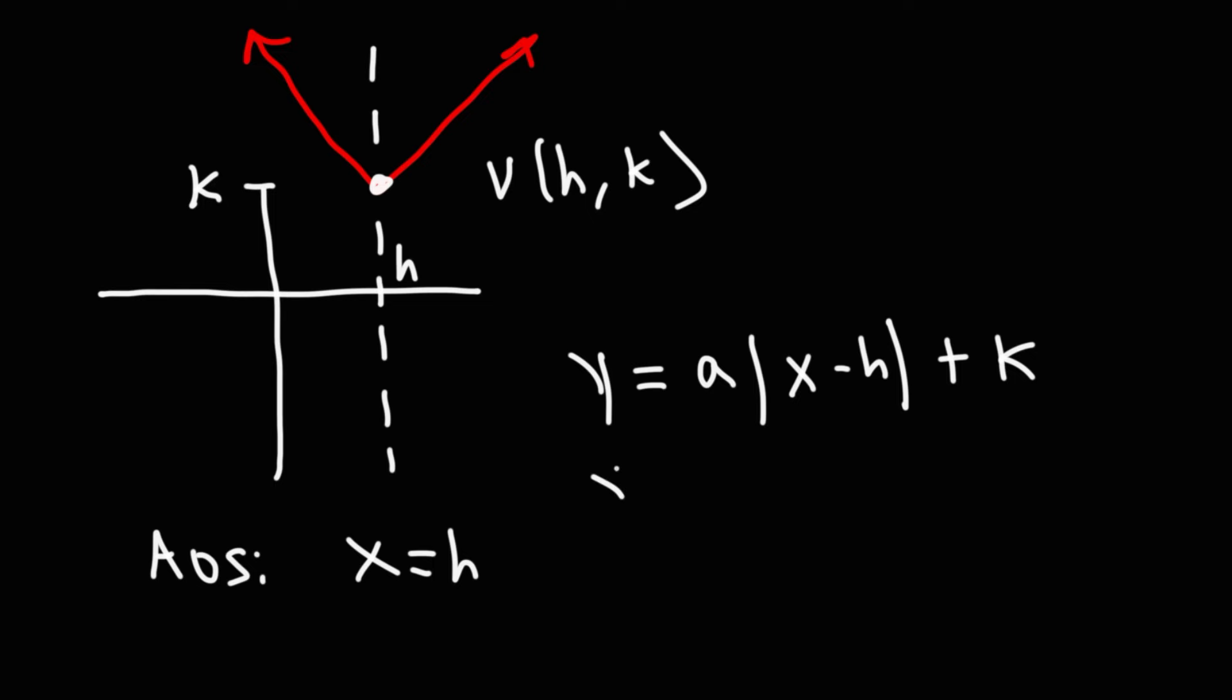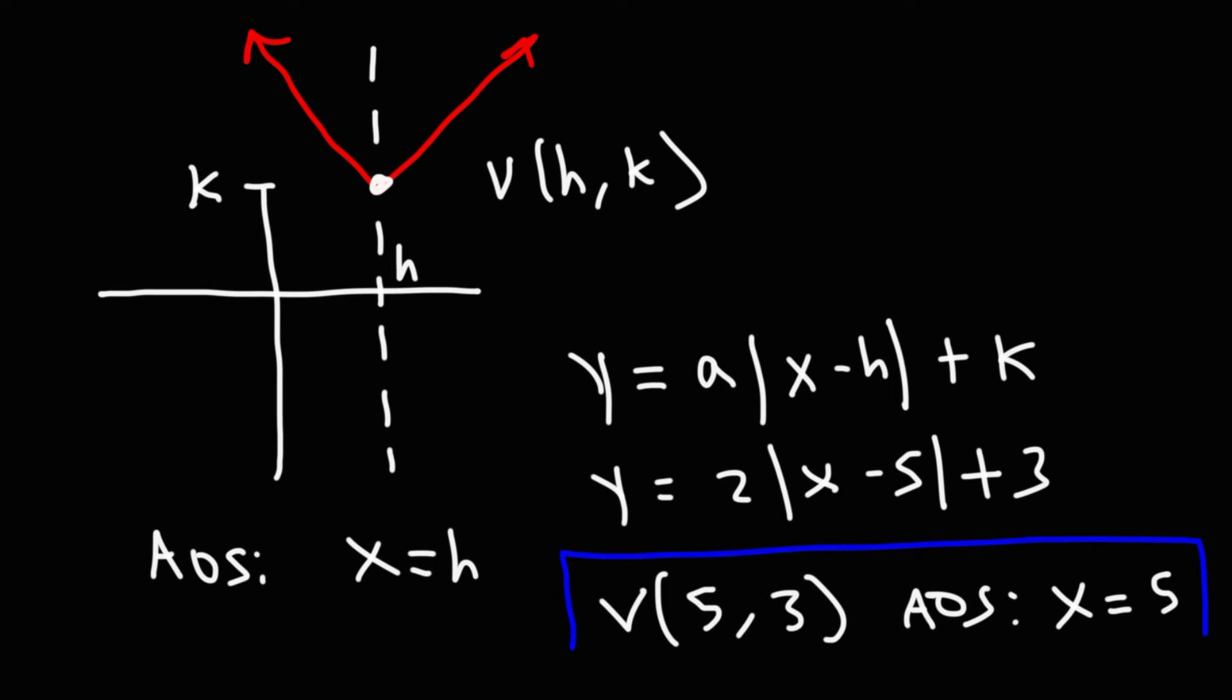So for an example, let's say if we have the absolute value function 2x minus 5 plus 3, the vertex will simply be 5 comma 3 and the axis of symmetry is just x equals h, which in this case, h is 5. So those are some notes that you may want to add to your notebook for those of you who are studying this topic.